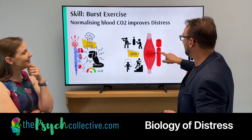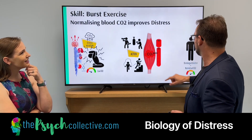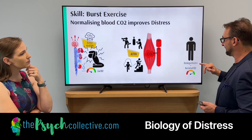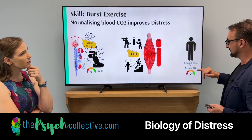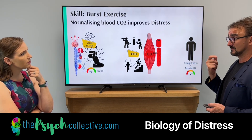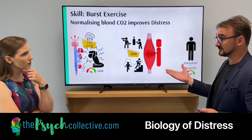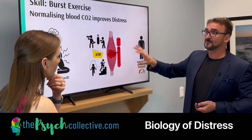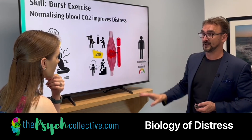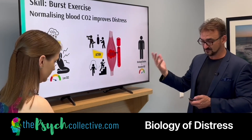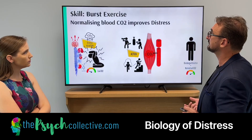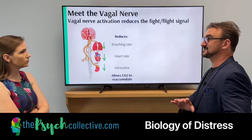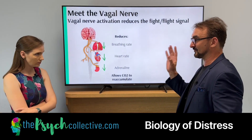Our muscles are very busy now, making all this carbon dioxide for us. What we've done is discharge the emotion by running or whatever, and we've normalized our blood carbon dioxide — so we can become quite calm. As quick as 30 seconds: whatever makes you huff and puff — bang — the minute you're huffing and puffing, you've normalized the CO2. So we've covered the CO2 part. The next bit is the nervous system.